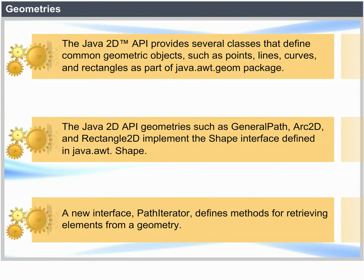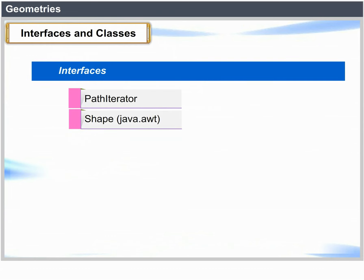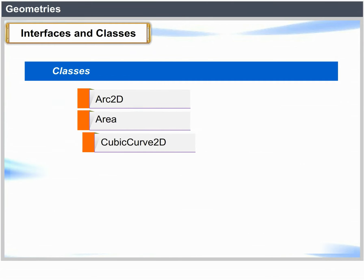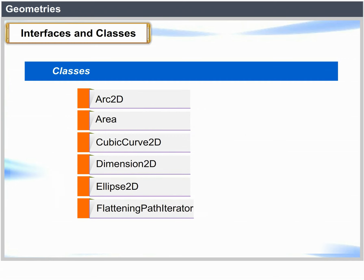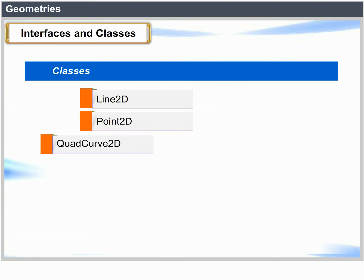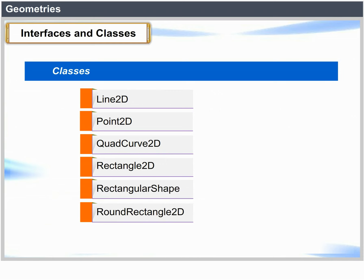A new interface PathIterator defines methods for retrieving elements from a geometry. Interfaces and classes: Interface — PathIterator. Classes — Arc2D, Area, CubicCurve2D, Dimension2D, Ellipse2D, FlatteningPathIterator, GeneralPath, Line2D, Point2D, QuadCurve2D, Rectangle2D, RectangularShape, RoundRectangle2D.